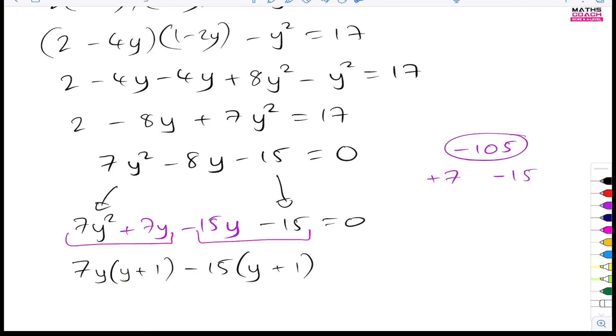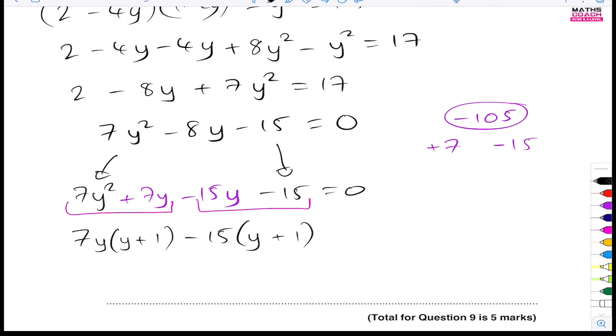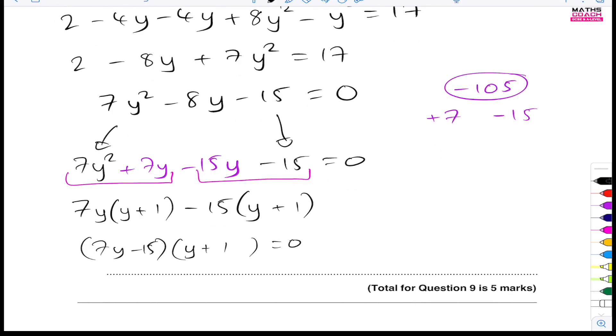Like I said, you can go and see that video I have on factorizing quadratics. So what are our two brackets going to be? It's just going to be 7y minus 15. And I've got that from here and here. And the other bracket will be y plus 1 equal to zero. So I will have here y would be equal to a positive 15 over 7. And y would be equal to minus 1.